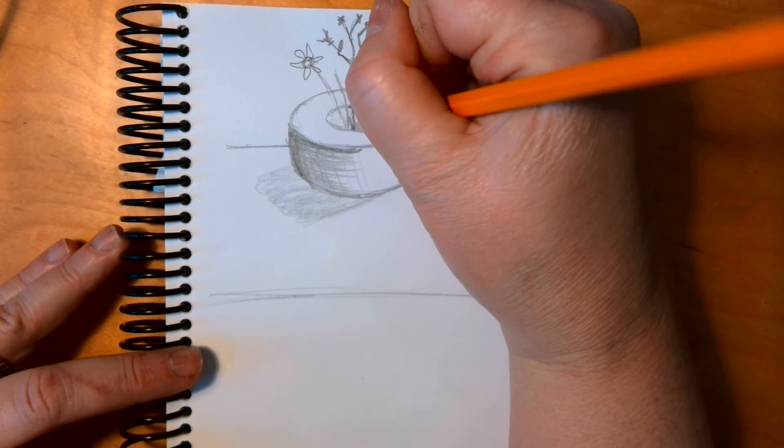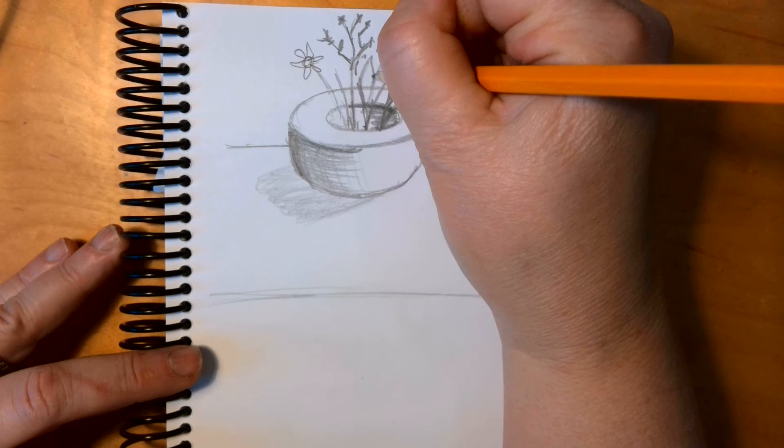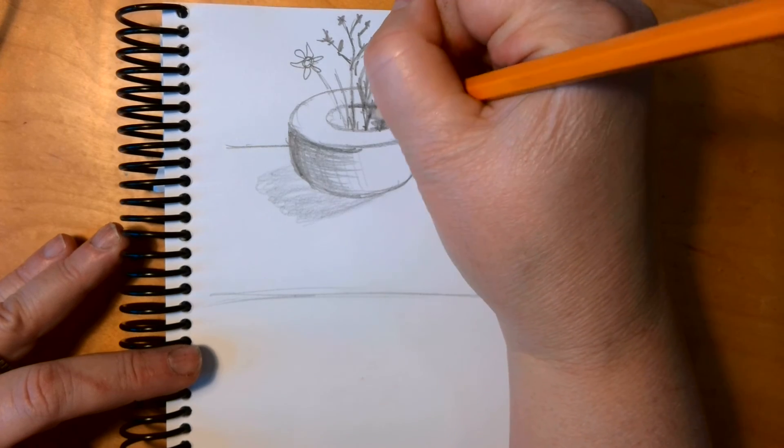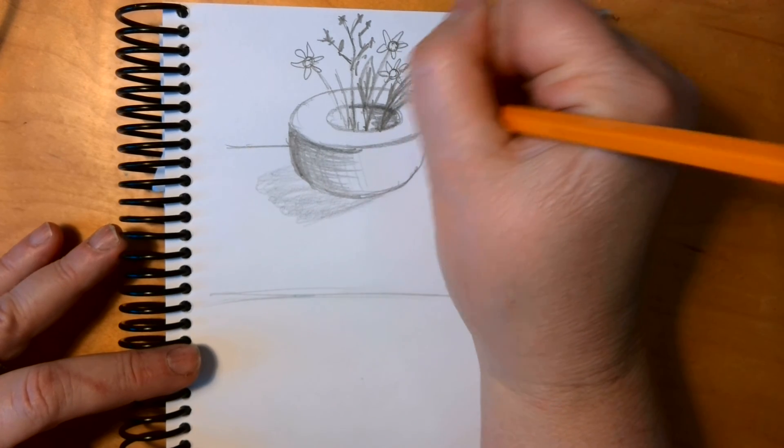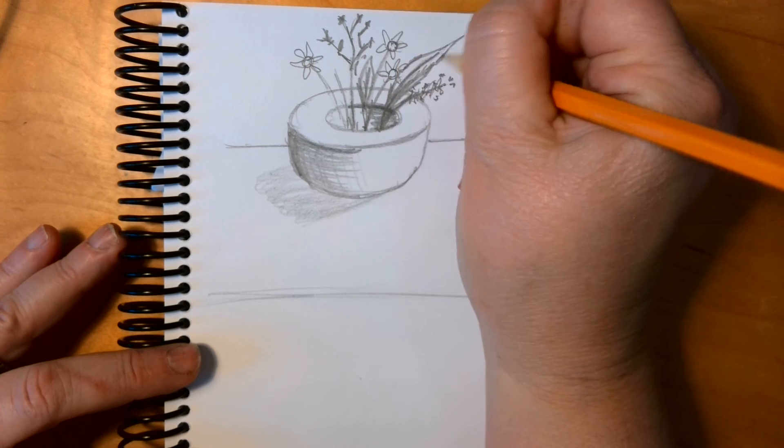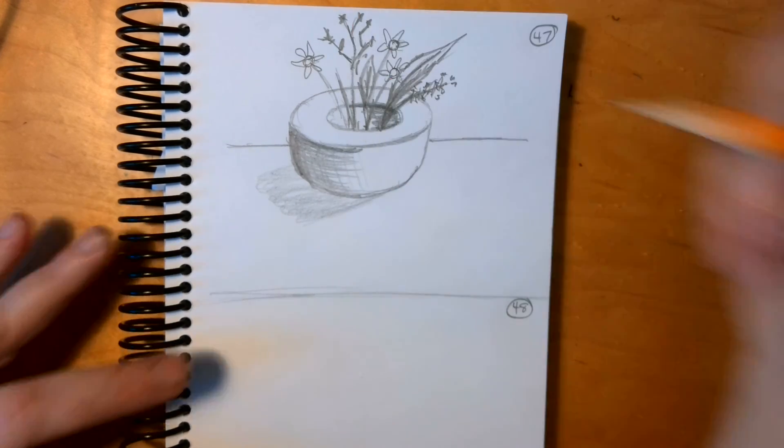Making sure that the stems disappear down into there. There's going to be a leaf. So where they're passing through, they're covering that back edge.